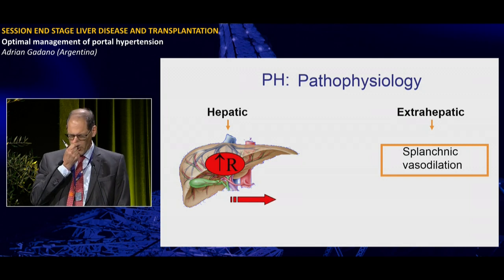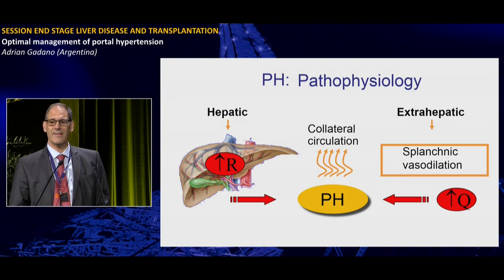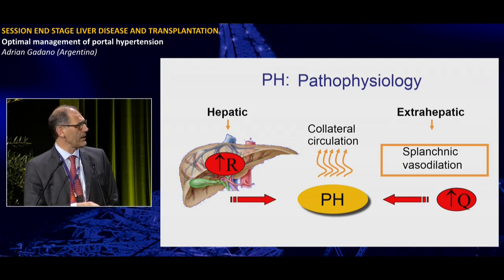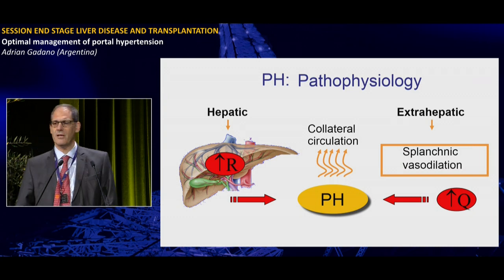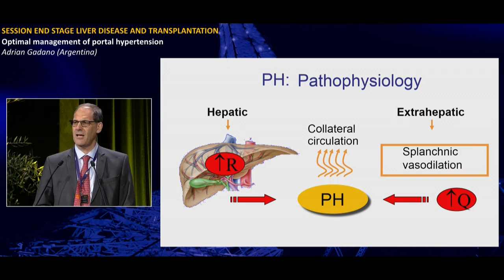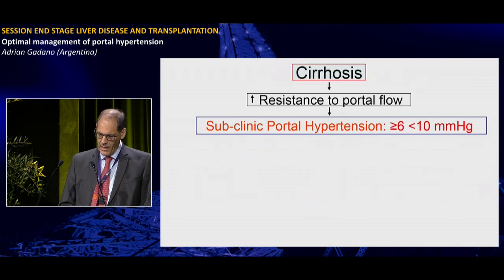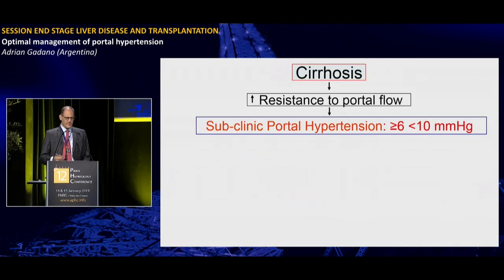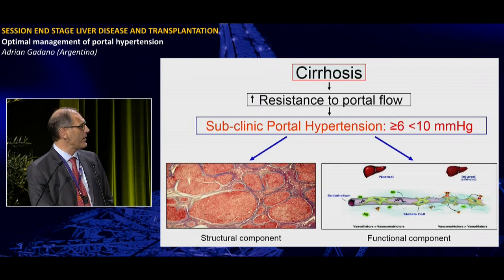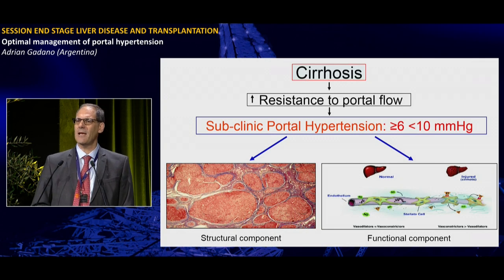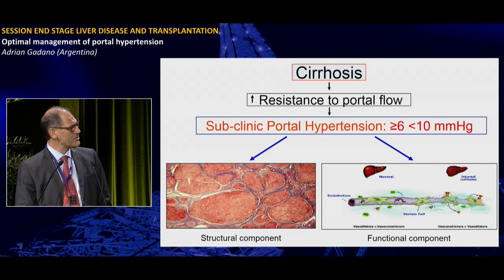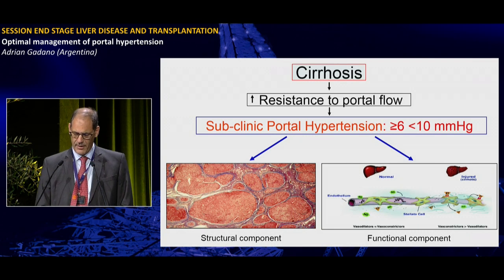From a pathophysiology standpoint, there is increased hepatic resistance followed by increased portal blood flow as a consequence of splanchnic vasodilation and hyperdynamic syndrome, resulting in portal hypertension, collateral circulation, and varices. At the subclinical stage, with a gradient of 6 to 10, there is mainly resistance to portal blood flow. There may be thin septa or advanced fibrosis without full cirrhosis, but a functional component may already play a role.